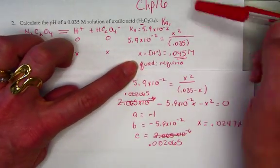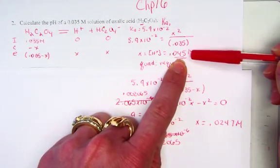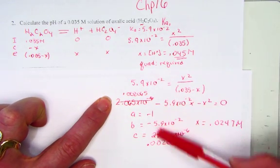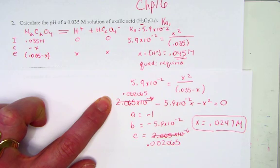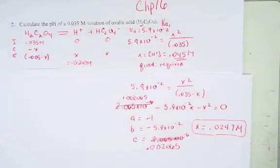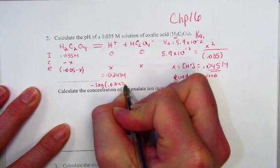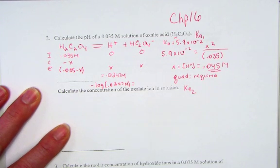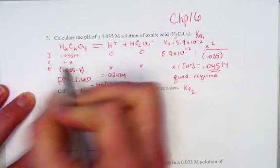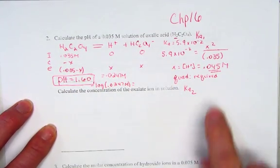So backing up, we noticed first of all, when we did not use the quadratic equation, the X value came out larger than the initial concentration. That's not possible, so we knew to back up and use the quadratic equation. A few times through that, we finally reached a common answer for the value of hydrogen ion. Knowing that hydrogen ion, I'll just transfer over 0.0247 molar to find the pH. We take our negative log of that concentration, and I'm finding 1.60.